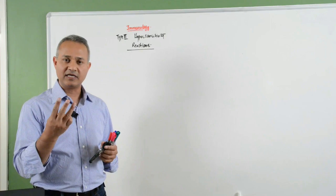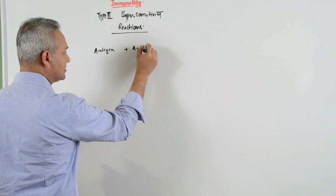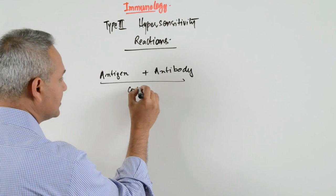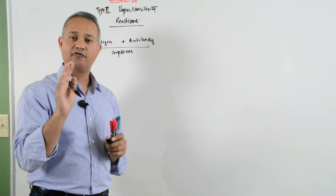You can actually remember type 3 from 3 things involved in this reaction. What happens is that there are antigen plus antibody complexes present freely in the blood circulation and in body tissues. This is the free floating antigen and antibody complexes.